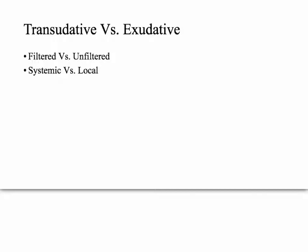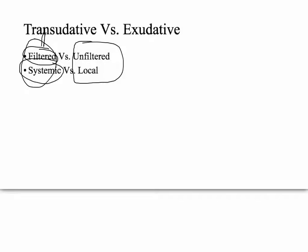Another way to think of this is systemic versus local. If you have heart failure, that affects the whole body — that's systemic — and your endothelial cells are still intact, so the fluid will be filtered. These systemic things create transudative effusion, filtered by the endothelial cells. Unfiltered effusions are usually from very local or nearby pathological processes — for example, pneumonia causes exudative effusion.